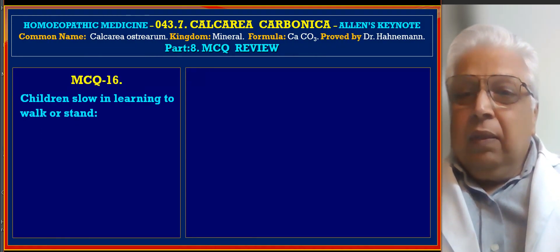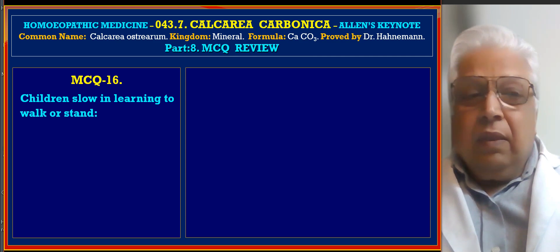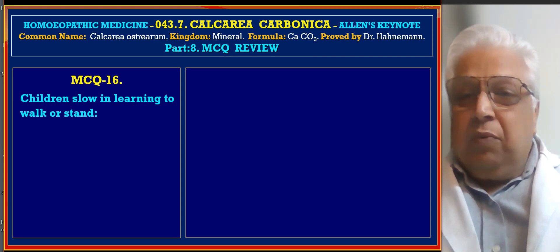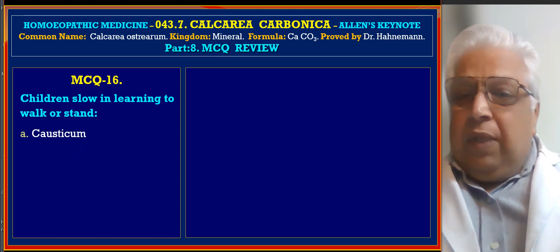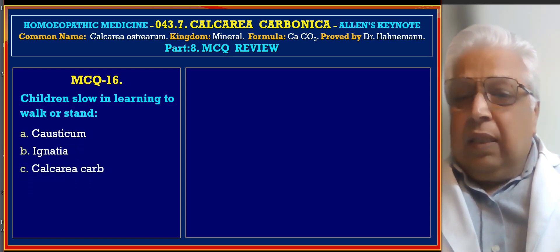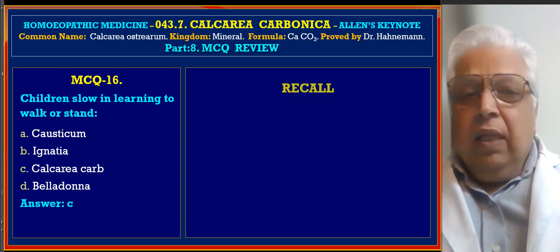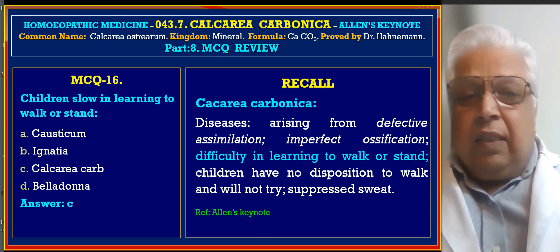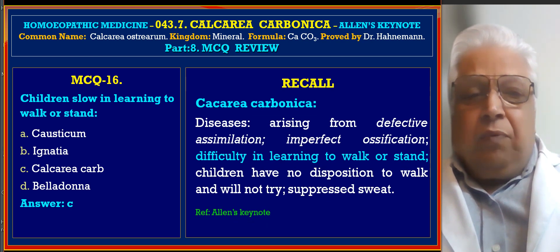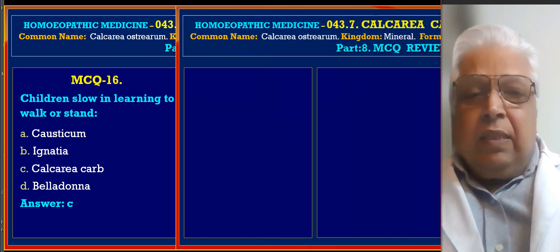MCQ 16: Children slow to learning to walk and stand — among Causticum, Ignatia, Calcarea Carb, and Belladonna. Answer is C, Calcarea Carb. Reference from Allen's Keynote: difficulty in learning to walk or stand.